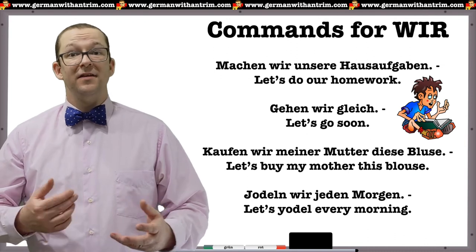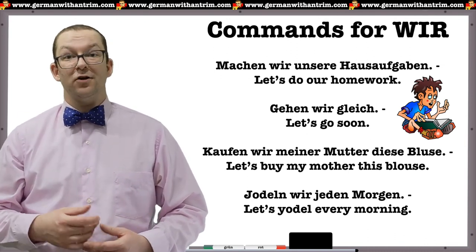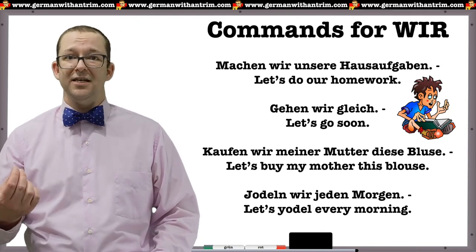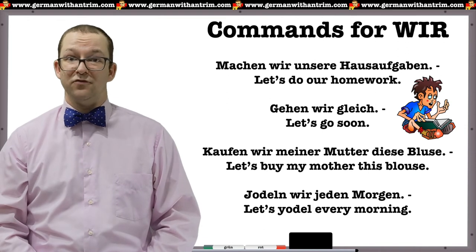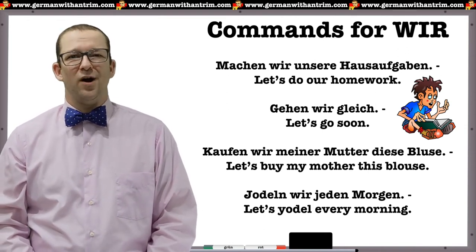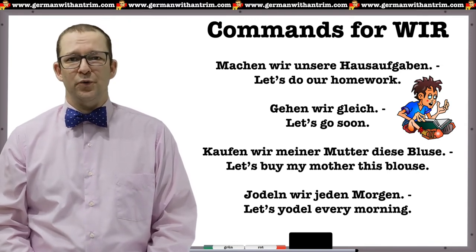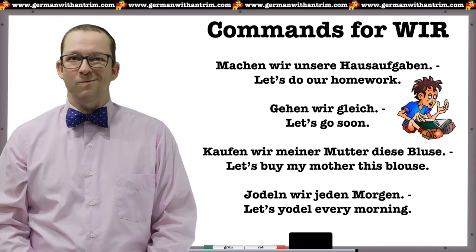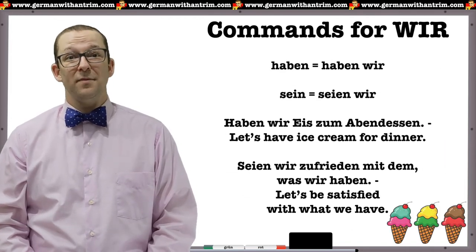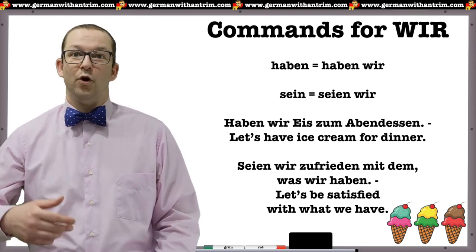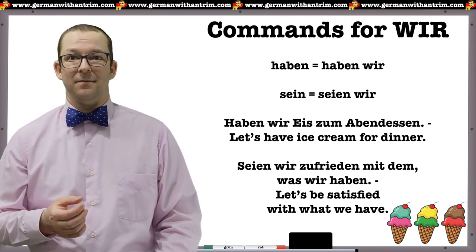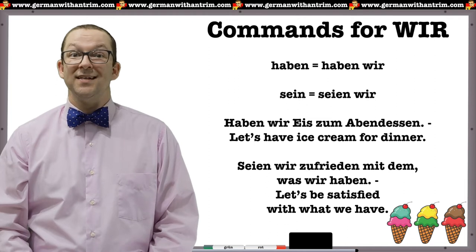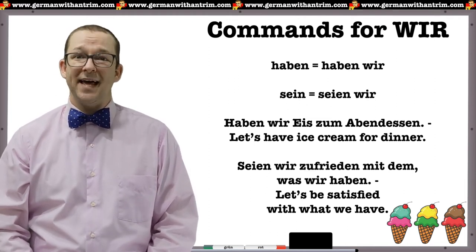Next up we have the Wir form commands, which are like saying 'let's do this.' Just like with the Sie form, you use the verb form that goes with wir and put the verb first. There is nothing weird about these forms. Machen wir unsere Hausaufgaben — let's do our homework. Gehen wir gleich — let's go soon. Kaufen wir meiner Mutter diese Bluse — let's buy my mother this blouse. Jodeln wir jeden Morgen — let's yodel every morning. Haben is not weird: Haben wir Eis zum Abendessen — let's have ice cream for dinner. Sein uses seien: Seien wir zufrieden mit dem was wir haben — let's be satisfied with what we have.